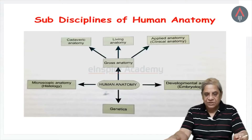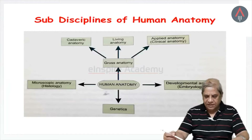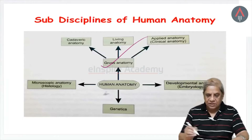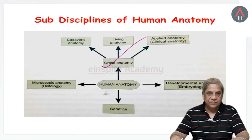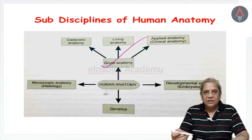Coming to the various sub-disciplines of human anatomy: there are four branches which you are supposed to learn in the first year. The first is gross anatomy, which will occupy most of your time — approximately 60 to 65 percent. Gross anatomy means the structure you can see with the naked eye without the help of a microscope.